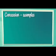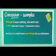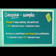Let's look at concession examples. 'Though it was raining, she went out.' We have the subordinating conjunction plus the dependent clause, then a comma, then the independent clause: 'She went out.' Another example: 'He lives in a small house, even though he's a millionaire.' We have the independent clause first, then the subordinating conjunction 'even though', and then the dependent clause.